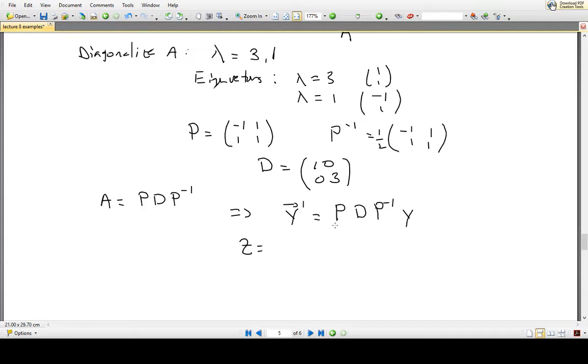And if we let Z be equal to, actually just multiplying each side by P inverse on the left, we have P inverse Y prime. And the reason we can put the derivative on everything is because remember P inverse is just a matrix of constants, so this is no problem to do. And on the right hand side we have D diagonal matrix times P inverse Y.